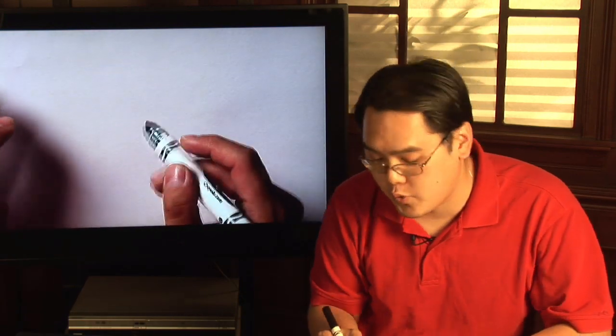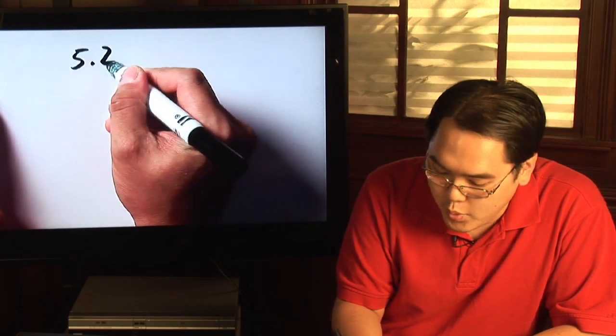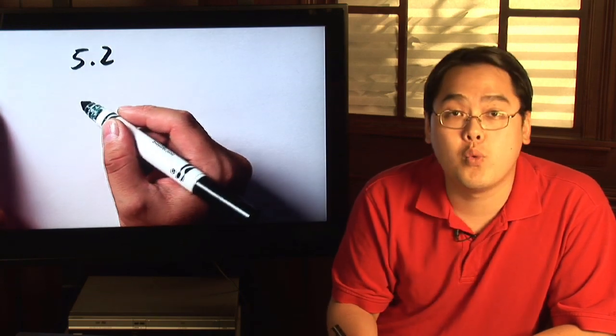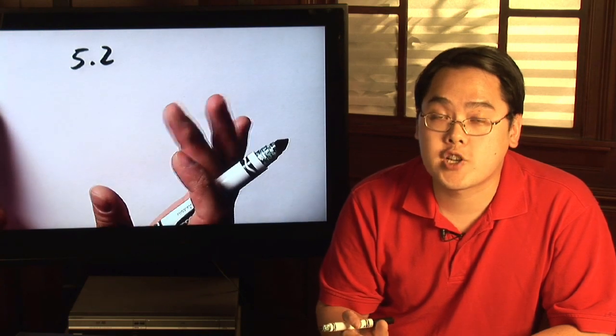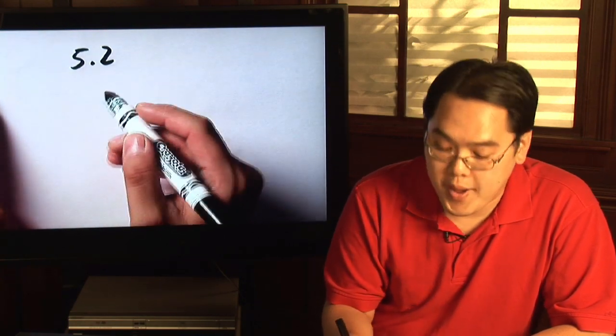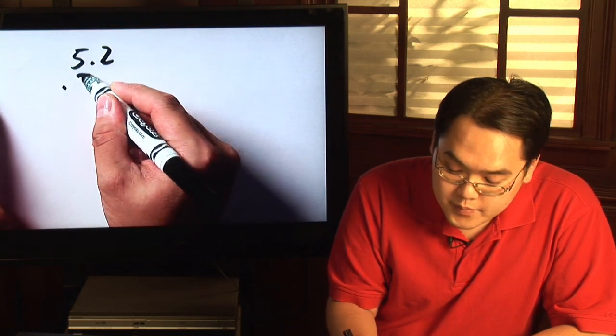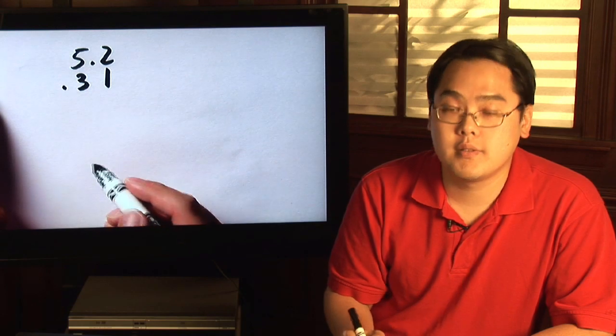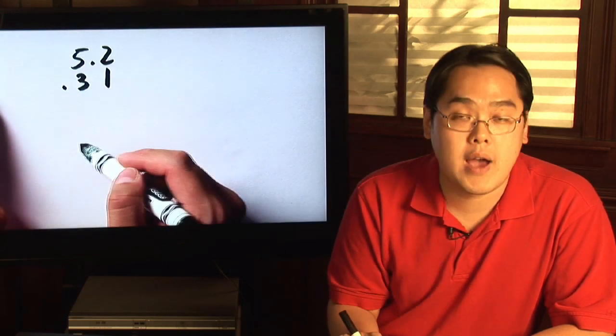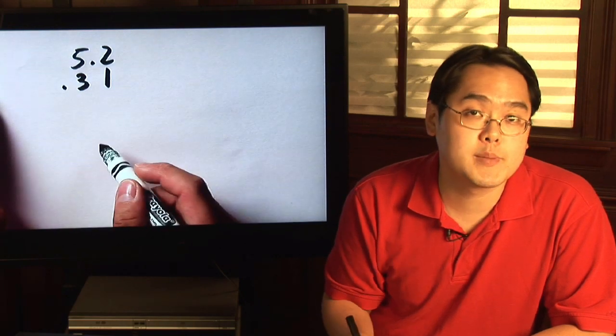So here's a basic example for you. Suppose you wanted to multiply 5.2 by 0.31. Now, unlike addition or subtraction where you have to line up the decimals exactly, with multiplication you don't worry about that. Since 0.31 has two digits, you just line them up so the 1 is under the 2 and the 3 is under the 5. You'll worry about the decimal points later.